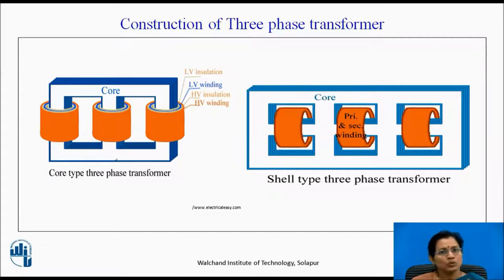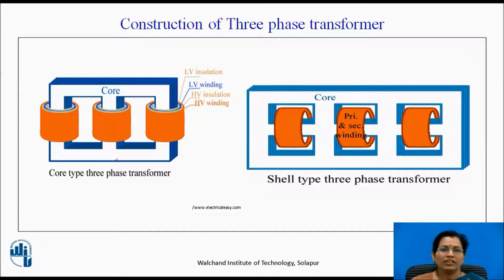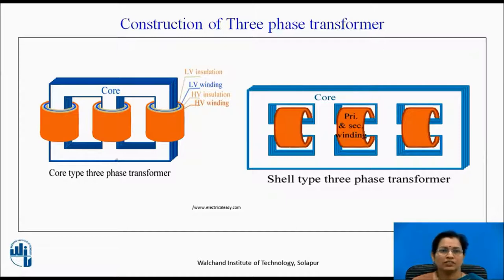If we want to explain the working of transformer in one word, we can say mutual induction. Mutual induction is when we vary the current in the primary or first coil, that induces the EMF in the second coil. This is the working principle of transformer.